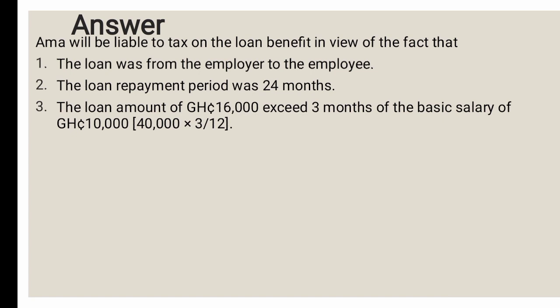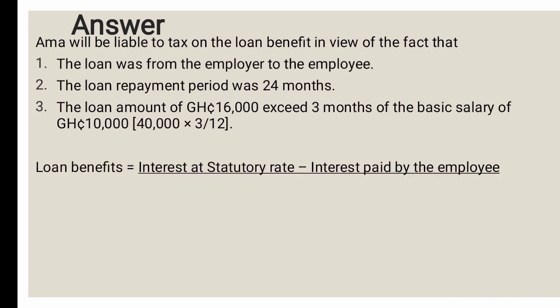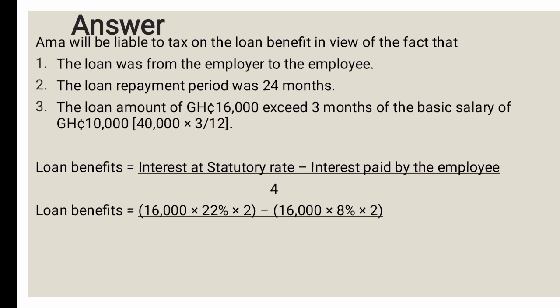The formula is: Loan Benefit = (Interest at Statutory Rate − Interest Paid by Employee) ÷ 4. Interest at statutory rate = GHS 16,000 × 22% × 2 years. Interest paid by employee = GHS 16,000 × 8% × 2 years. The time is 2 years because the repayment period is 24 months.